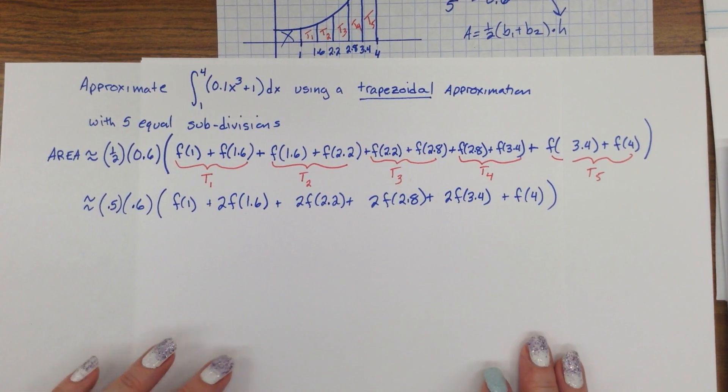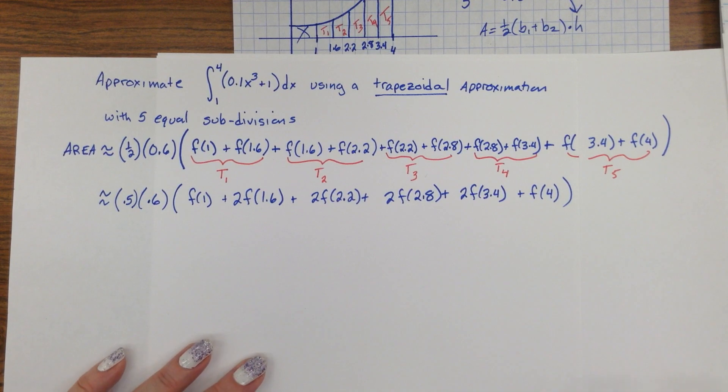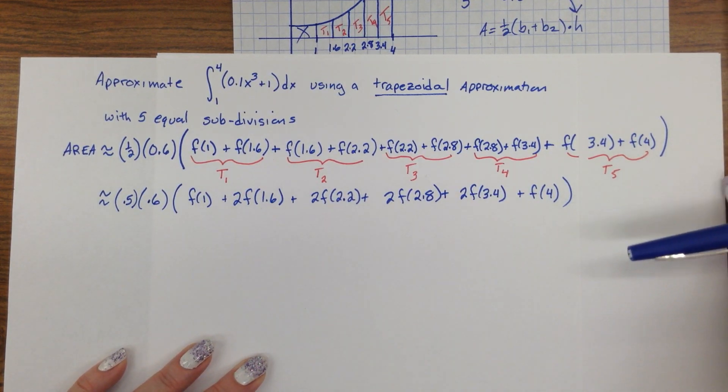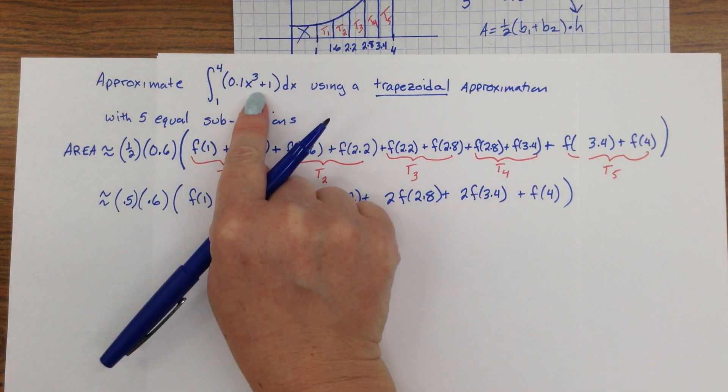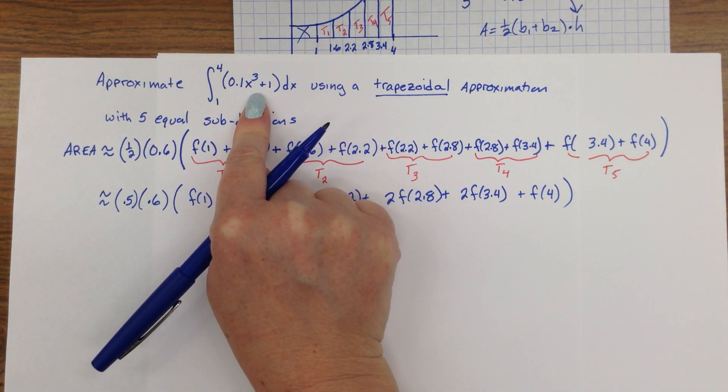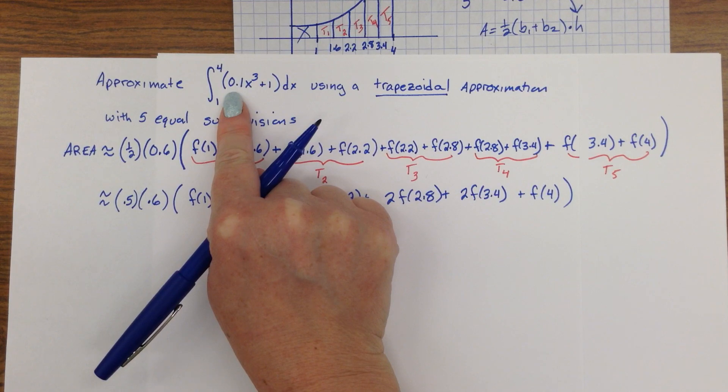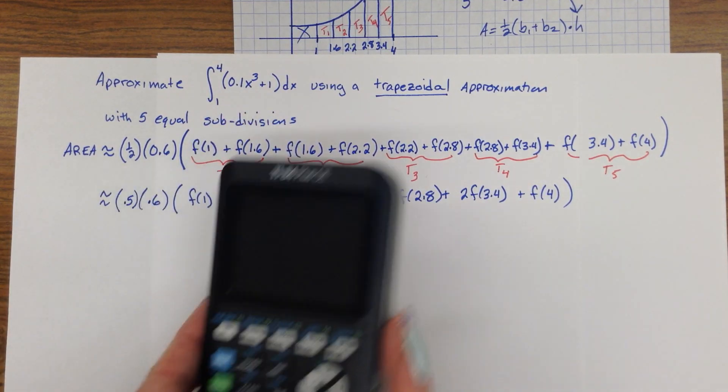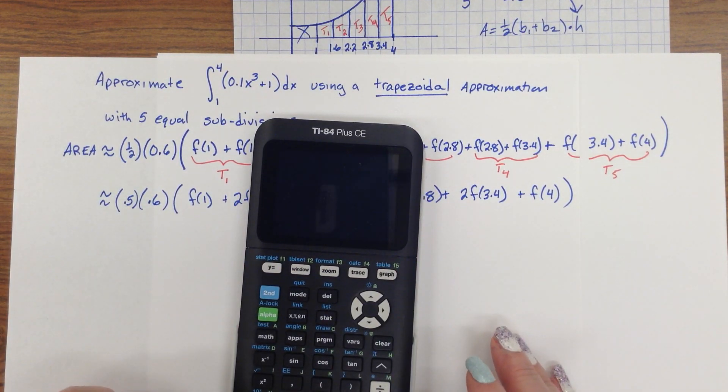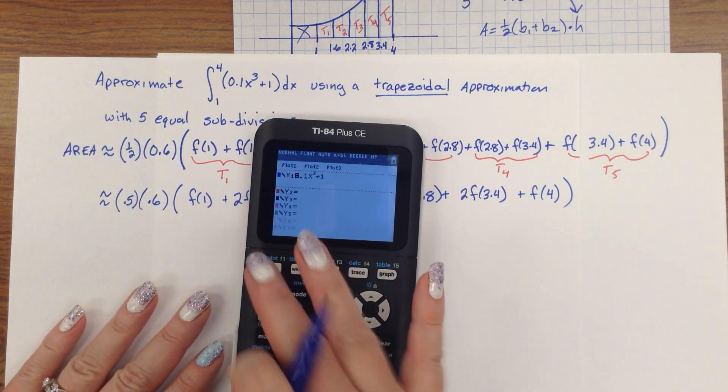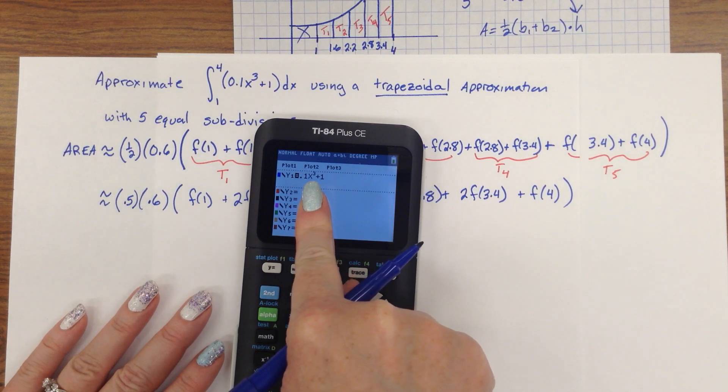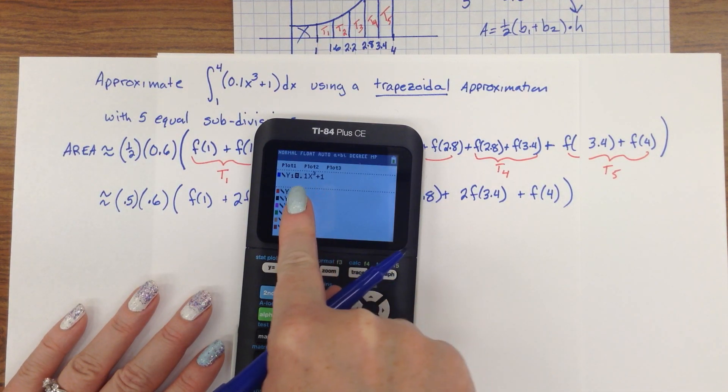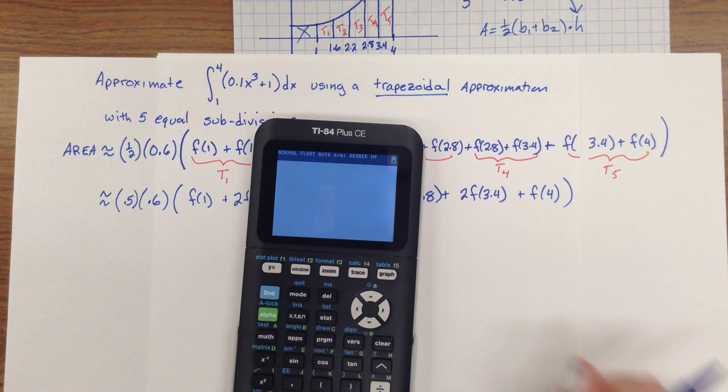All right. So, at this point in time, it's calculator time. Now, we want to use our graphing calculators wisely. So, here's what I'm going to do. Our function is the function 0.1x cubed plus 1. So, I have gone ahead to my graphing calculator. And you, if you need to pause, please feel free to pause your video. Go to y equals. On y1, I have typed in that function. 0.1x cubed plus 1. All right. I'm going to go back to my home screen.